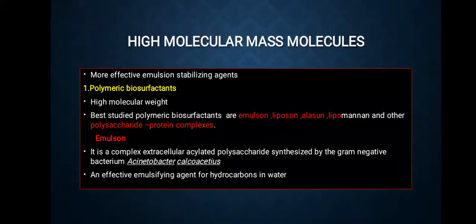High molecular mass molecules are more effective emulsion stabilizing agents. These include polymeric biosurfactants which have high molecular weight. The best studied polymeric biosurfactants are emulsan, liposin, alasan, lipomannan, and other polysaccharide-protein complexes. Emulsan is a complex extracellular acylated polysaccharide synthesized by the gram-negative bacterium Acinetobacter calcoaceticus, an effective emulsifying agent for hydrocarbons in water.